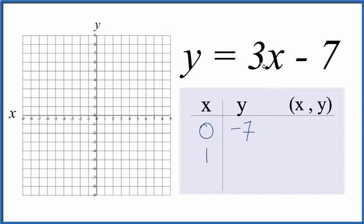How about 1? 3 times 1 is 3. 3 minus 7, that's negative 4.